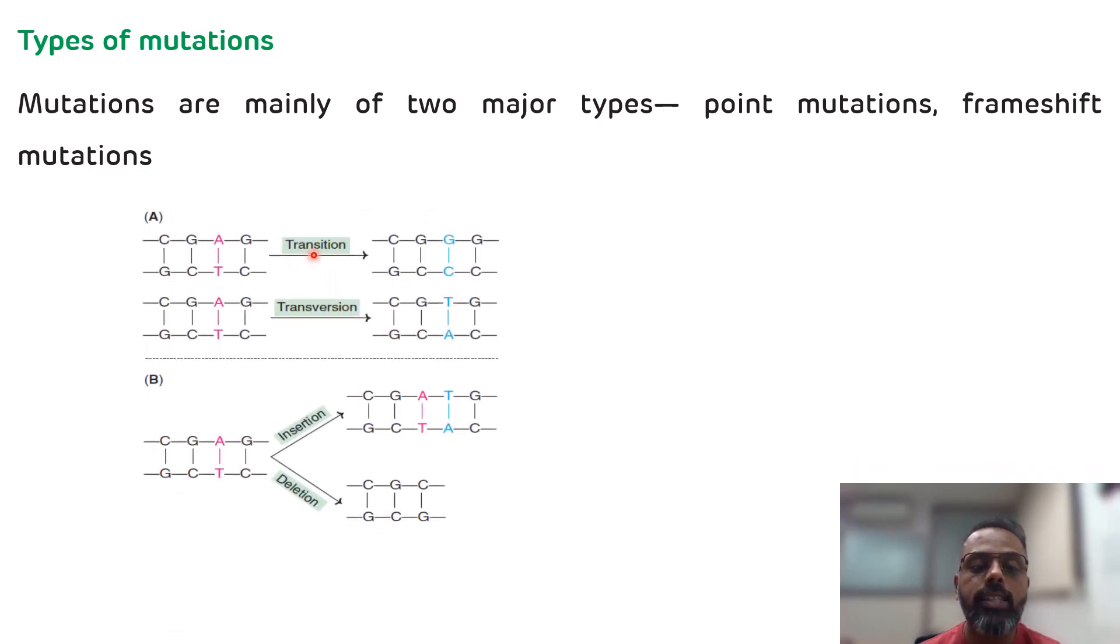First one is the transition point mutation in which purine is replaced by purine and pyrimidine is replaced by pyrimidine. While the second one is the transversion mutation where purine is replaced by pyrimidine and pyrimidine is replaced by purine. That is the point mutation.